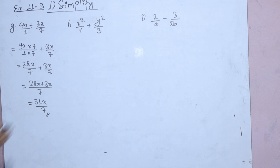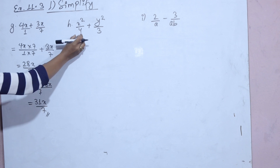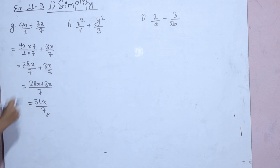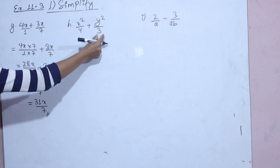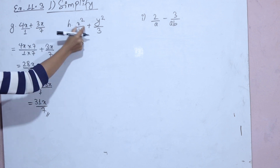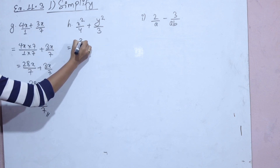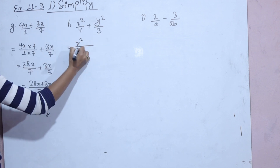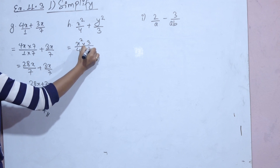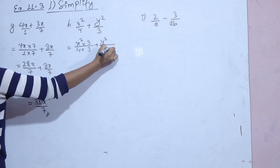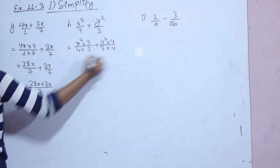Next sub-question: the denominator is 4 and 3. We need to find the LCM of 4 and 3. Three multiplied by 4 and four multiplied by 3 gives common denominator 12. So we get x squared by 12 plus y squared by 12.